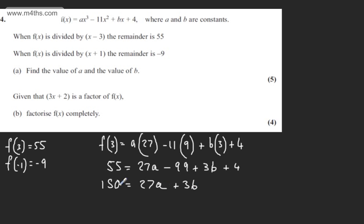We can simplify this by dividing through by 3, so 50 is equal to 9a plus b. I'm going to call this equation 1.